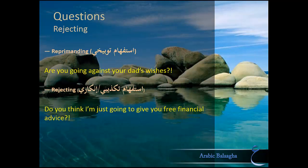The next type is a really popular one called اسْتِفْهَام إِنْكَارِي — literally the 'rejecting question.' It has two types. The first is اسْتِفْهَام تَوْبِيخِي, where you reprimand someone by asking a question — for example, 'Are you going against your dad's wishes?' Here you're not really interested in an answer; you're reprimanding your friend for disobeying his dad. The second type is اسْتِفْهَام تَكْذِيبِي, where you reject the underlying statement of a question — for example, 'Do you think I'm just going to give you free financial advice?' — meaning, I'm not going to do that. In both scenarios you're rejecting something by asking a question.